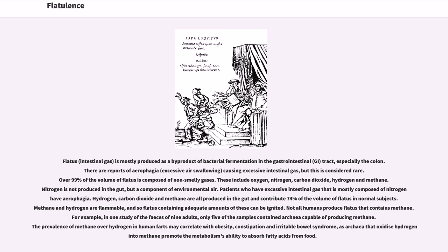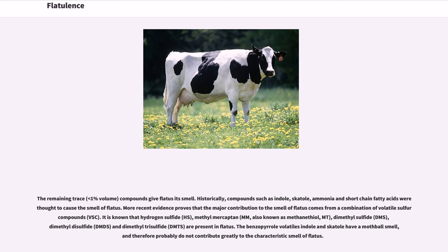Methane and hydrogen are flammable, and so flatus containing adequate amounts of these can be ignited. Not all humans produce flatus that contains methane. For example, in one study of the feces of nine adults, only five of the samples contained archaea capable of producing methane. The prevalence of methane over hydrogen in human farts may correlate with obesity, constipation, and irritable bowel syndrome, as archaea that oxidize hydrogen into methane promote the metabolism's ability to absorb fatty acids from food.